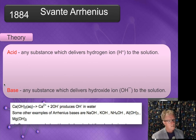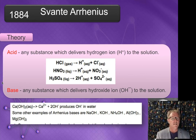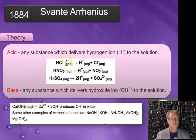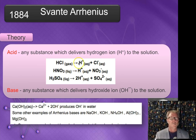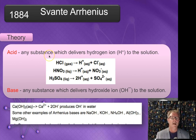So along came Svante Arrhenius. He said that an acid is any substance which delivers hydrogen ions to the solution. Here are some familiar equations: hydrochloric gas ionizes to produce hydrogen ions and chloride ions when put into a liquid — that's why we have the aqueous notation. Nitric acid dissociates to produce hydrogen ions, therefore it's an acid. And sulfuric acid similarly produces hydrogen ions. Arrhenius said we have electrolytes — substances that break apart and can conduct electricity — and it was those ions in solution that gave rise to acid and basic properties.